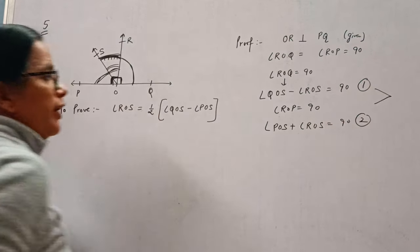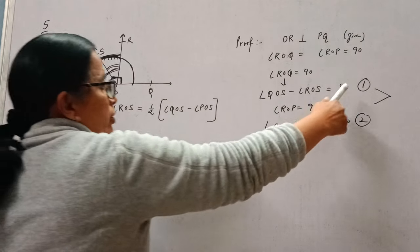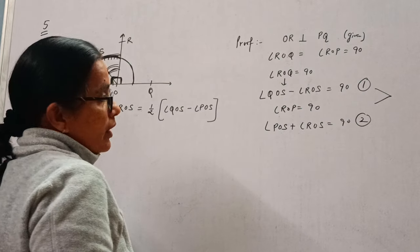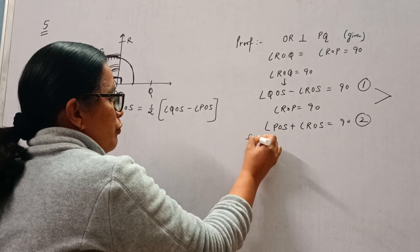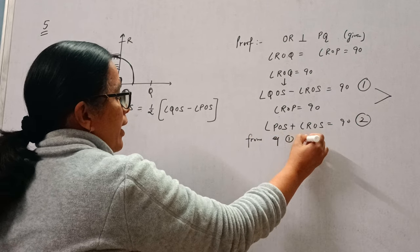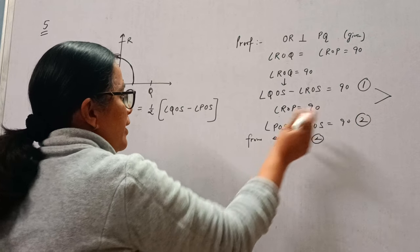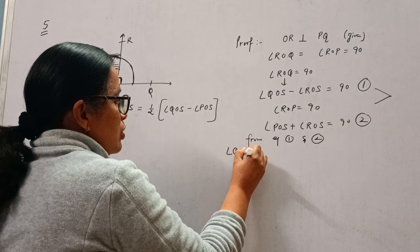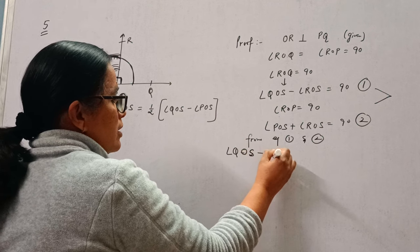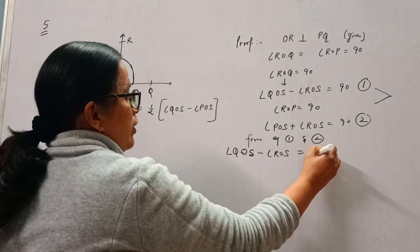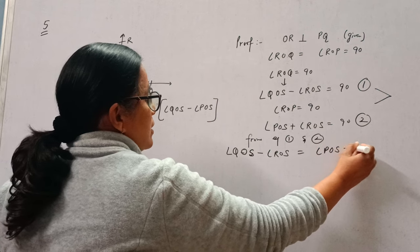Now see equation 1 and 2. The right side of both equations is equal, so the left side will also be equal. So from equation 1 and 2, if the right side is equal, then their left side is also equal. So QOS minus ROS is equal to POS plus ROS.